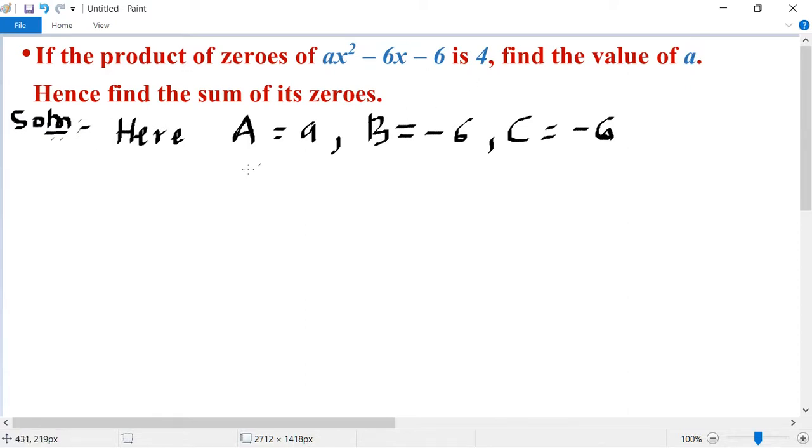Product of zeros is 4 means alpha into beta equal to 4. Alpha beta formula is C by A. So C by A equal to 4. Put the C value: minus 6 upon a equal to 4.